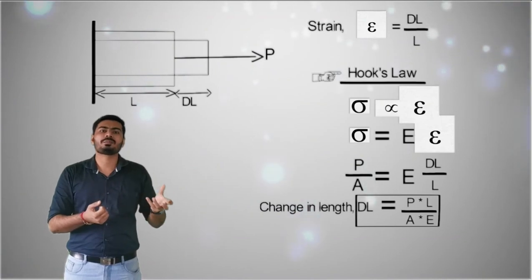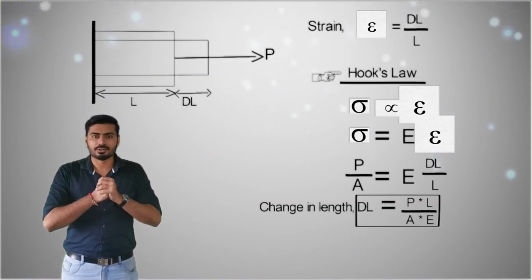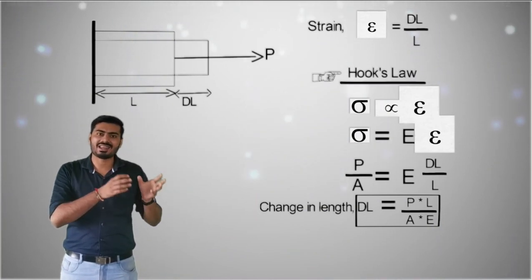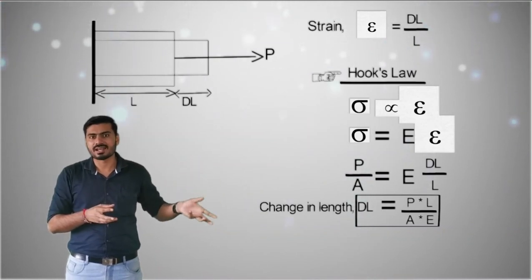Young's modulus, which was introduced to remove the proportionality in Hooke's Law, is directly equated to stress divided by epsilon. Since epsilon is unit-less, the unit of Young's modulus is the same as that of stress — Newton per meter square or Newton per mm square. So this was all about this lecture. In the upcoming lecture we will discuss the stress-strain diagram and the different points and their importance. Thank you.